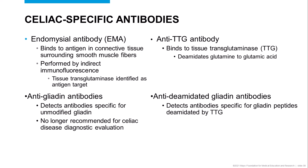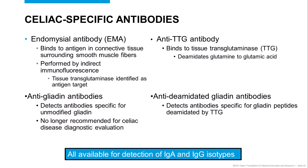Deamidated gliadin is formed in vivo through the activity of tissue transglutaminase. TTG and deamidated gliadin antibodies are detected using antigen-specific immunoassays, including plate-based immunoassays, bead-based multiplex, and chemiluminescent immunoassays. It is important to note that testing for each of these antibodies can involve assessing for either IgA or IgG isotypes.